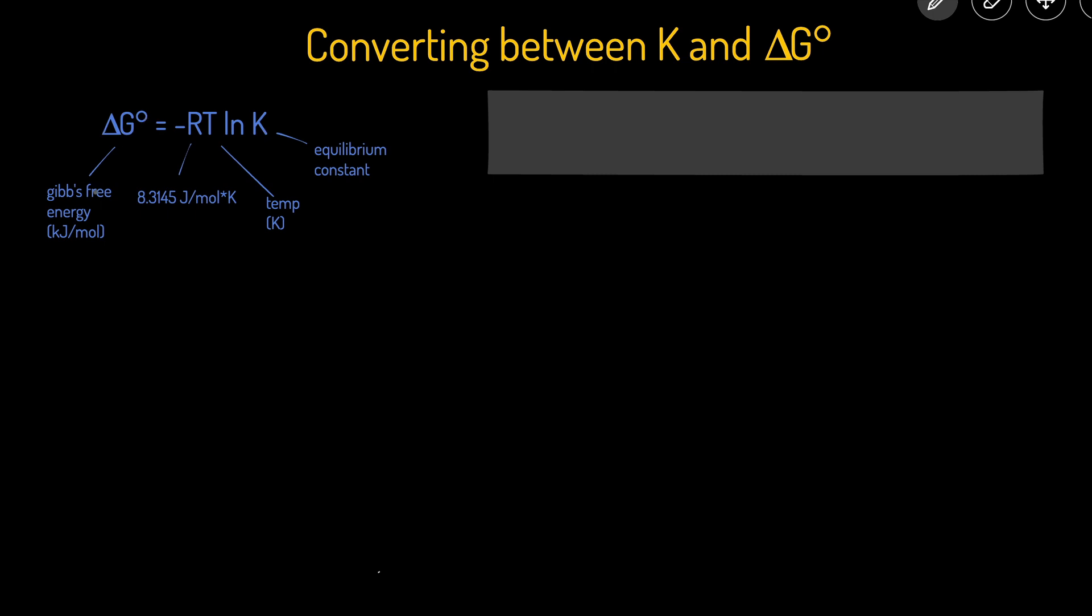ΔG° is the standard change of Gibbs free energy, typically given in kilojoules per mole. R is the constant 8.3145 joules per mole times degrees Kelvin. We have a discrepancy here: ΔG is typically in kilojoules but R is in joules, so make sure to convert both to the same units. T is the temperature in degrees Kelvin, and K is the unitless equilibrium constant.